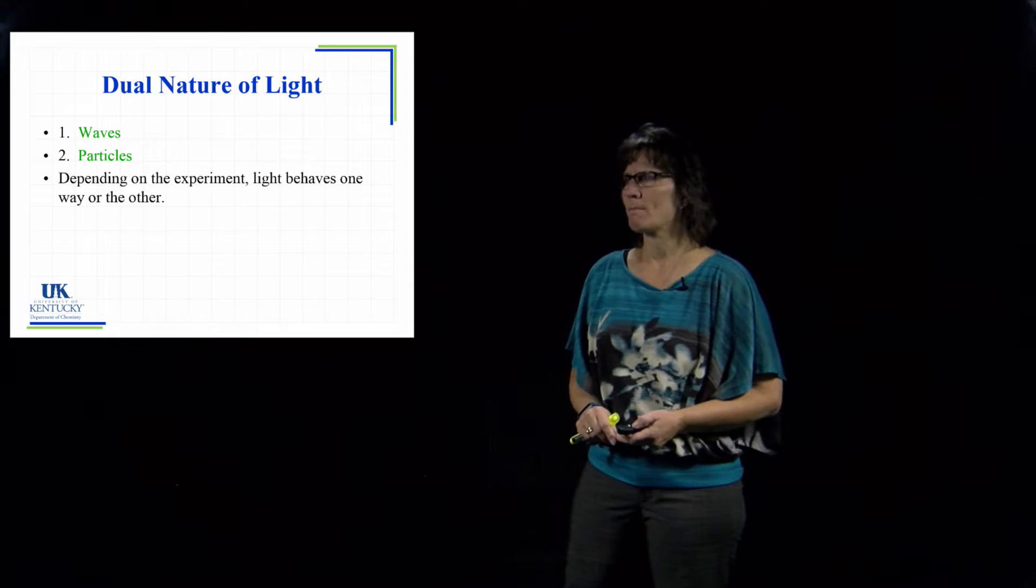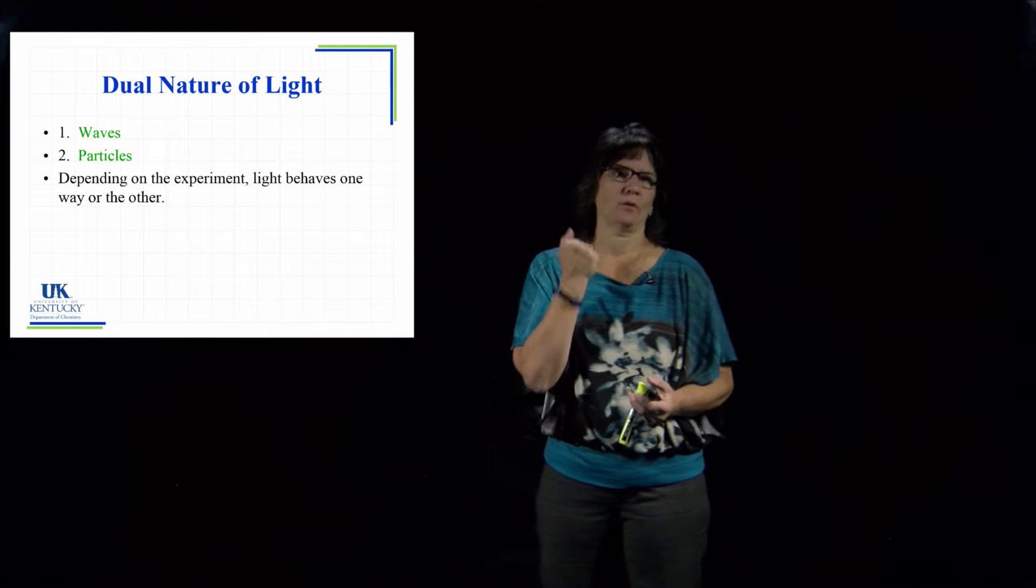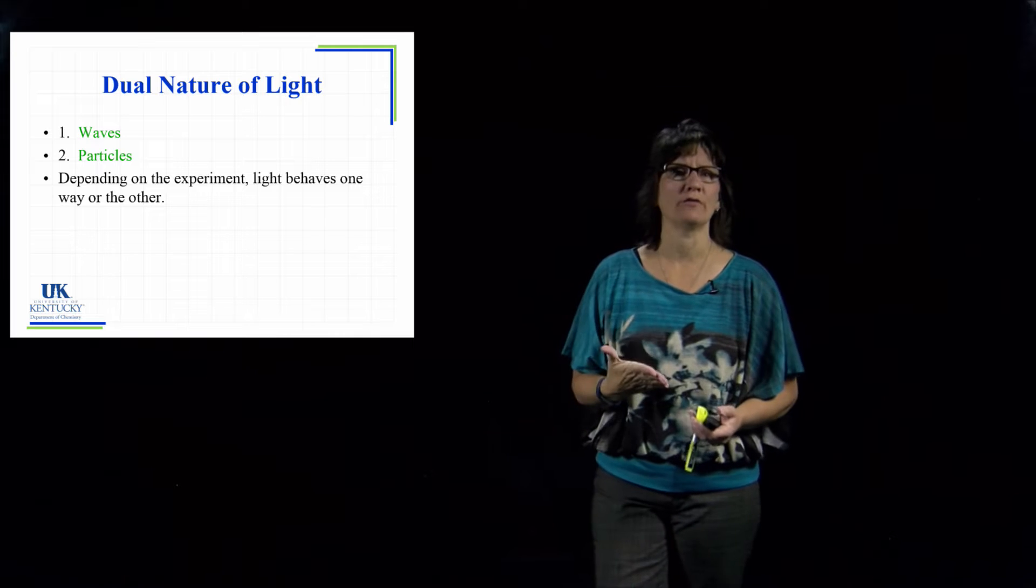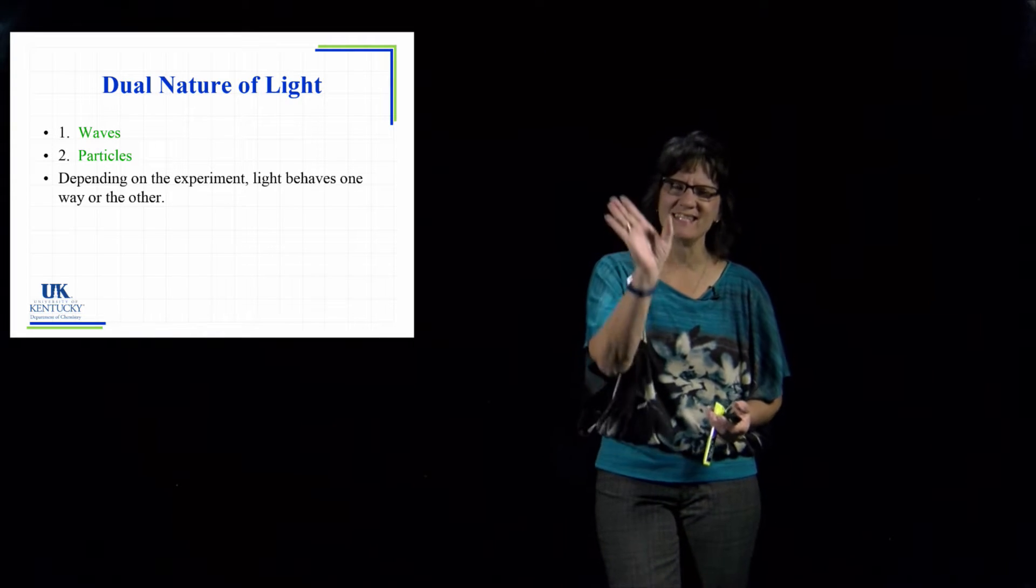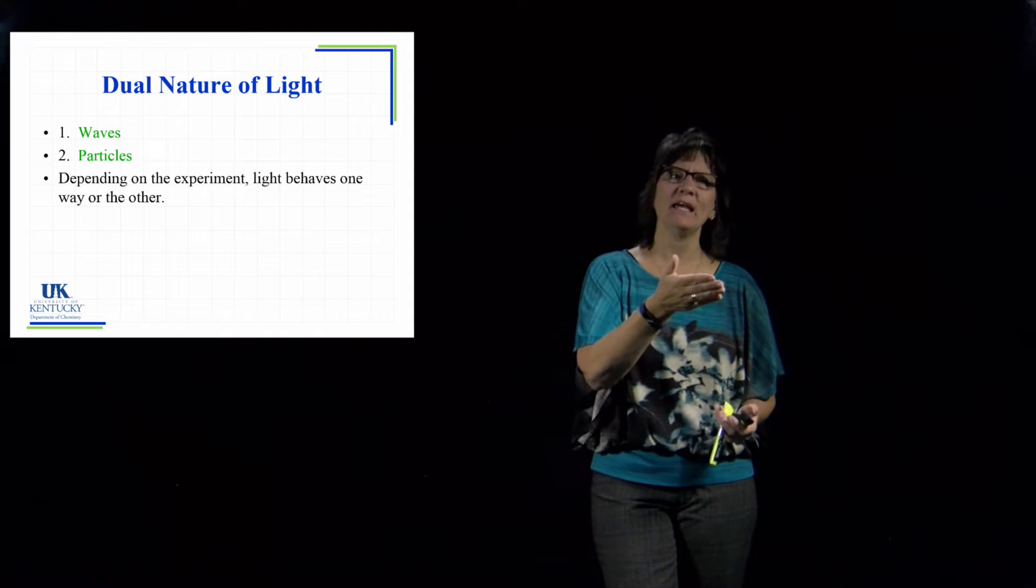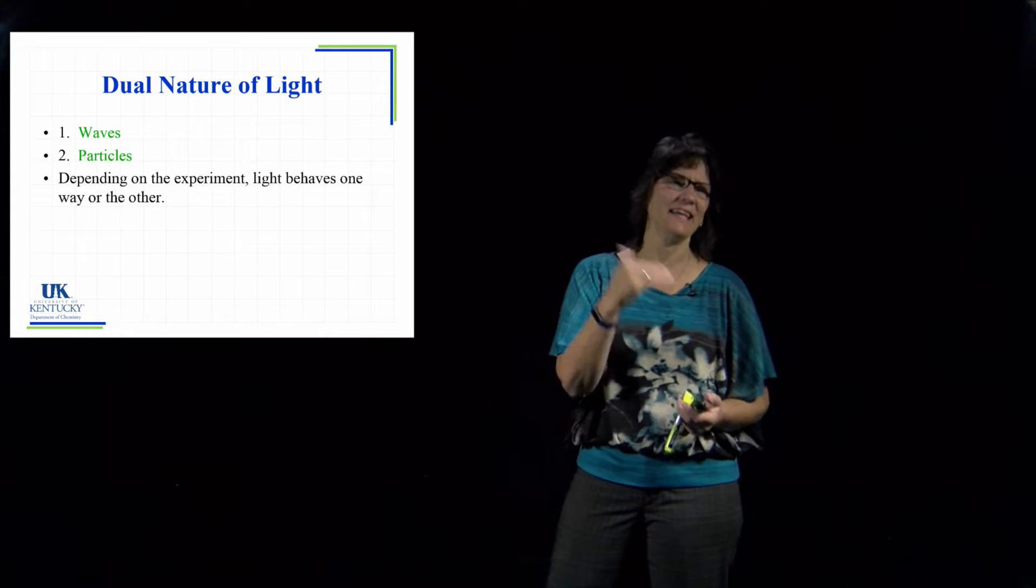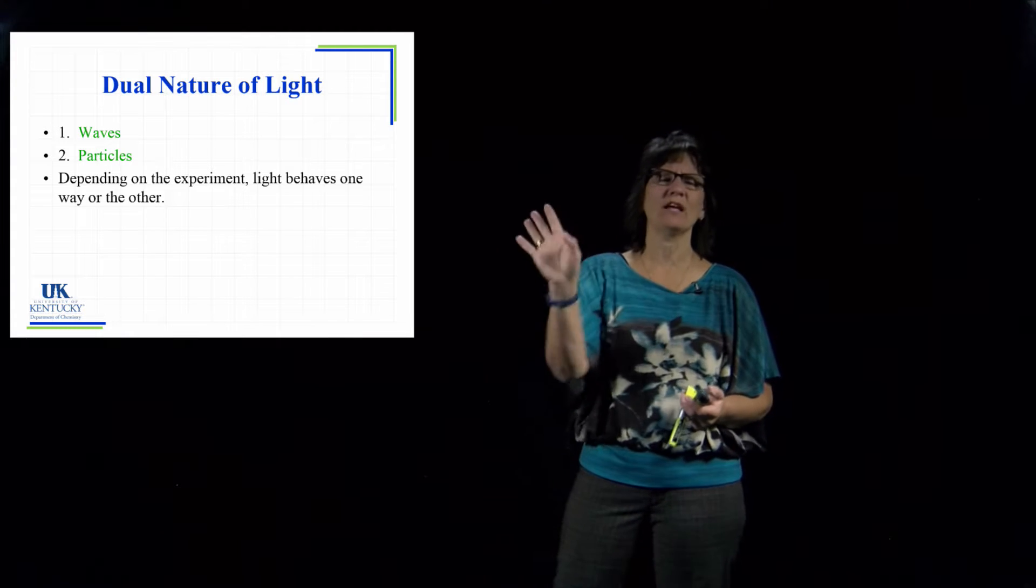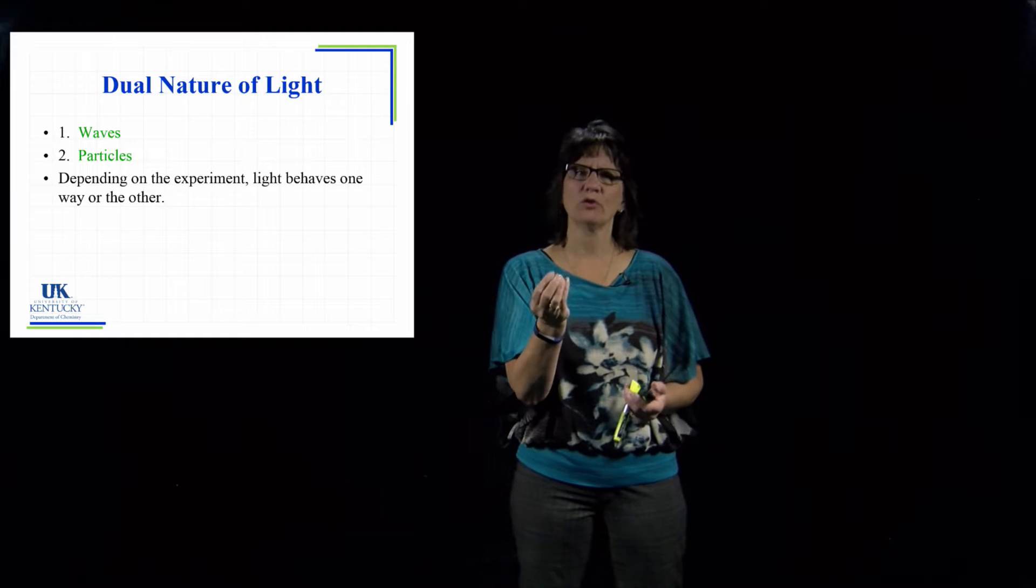Now we saw this with the photoelectric effect. Einstein came along and said the reason we're seeing this nature of light coming in and knocking electrons off, the interaction between its frequency of light, the energy of that light, and the number of electrons that got pushed off—we saw that there was this particle nature that light had.